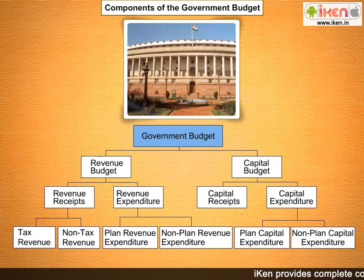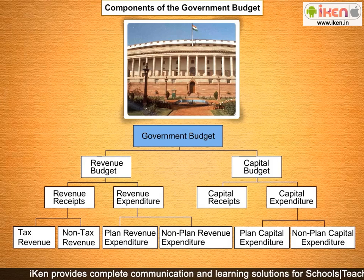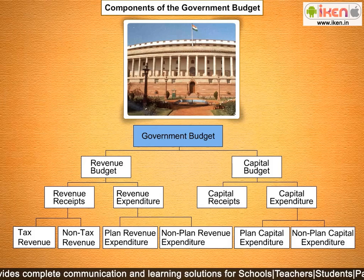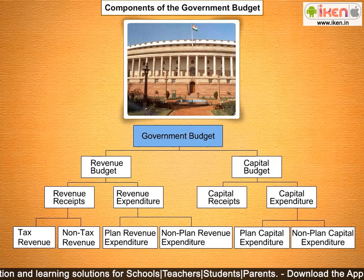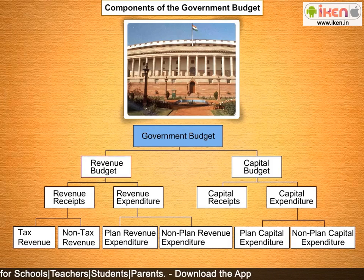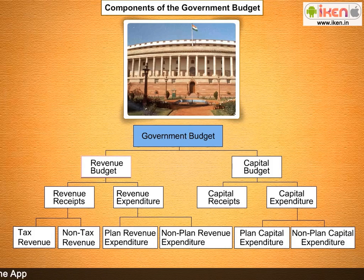This annual financial statement constitutes the main budget document. The budget must distinguish expenditure on the revenue account from other expenditures. Therefore, the budget comprises a revenue budget and a capital budget. The revenue budget is a financial statement that includes the revenue receipts of the government — that is, revenue collected by way of taxes and other receipts — and also contains items of expenditure met from such revenue.